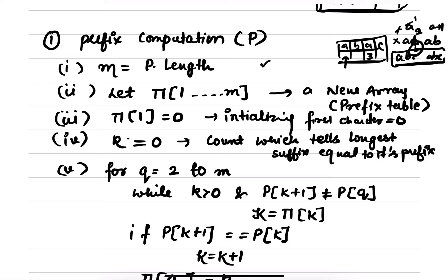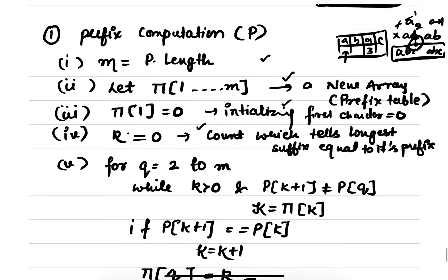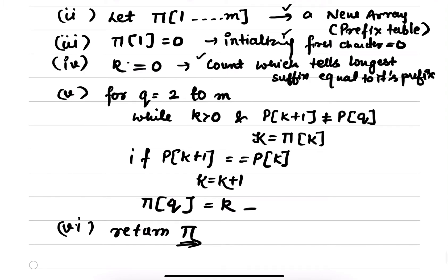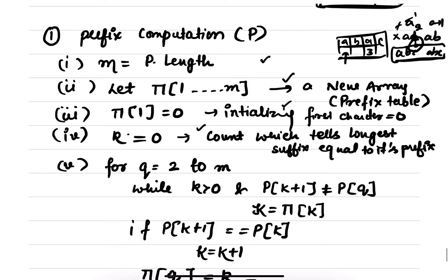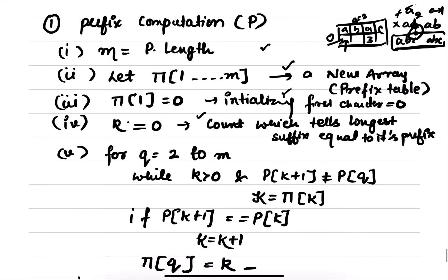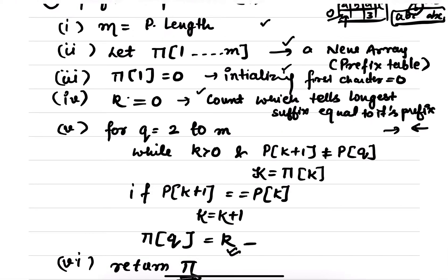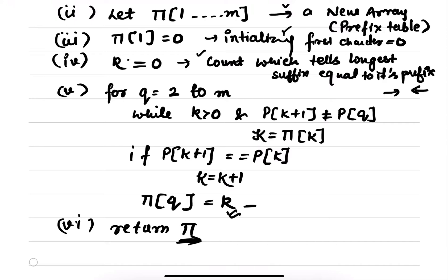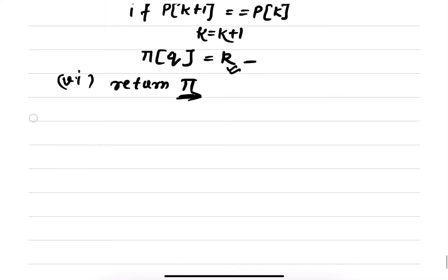So the prefix computation is clear: you give a pattern as input, initialize an empty array where the first character is 0, and k is responsible for the count. Starting from q equals 2 — since q equals 1 is already initialized to 0 — you check the prefix and suffix, and whatever the largest number that matches, you write that as k and return the value.